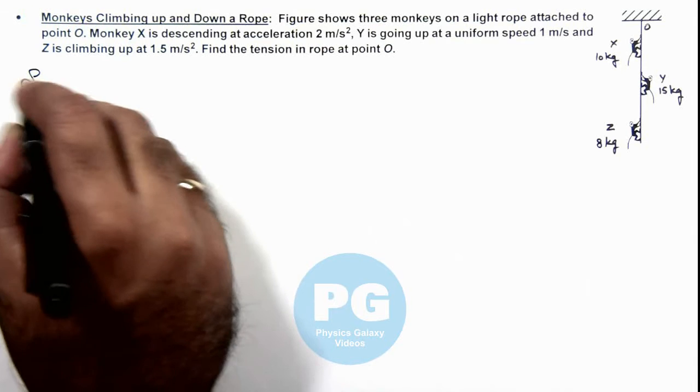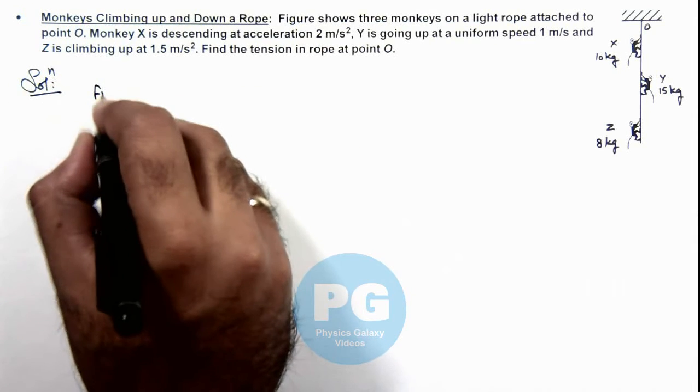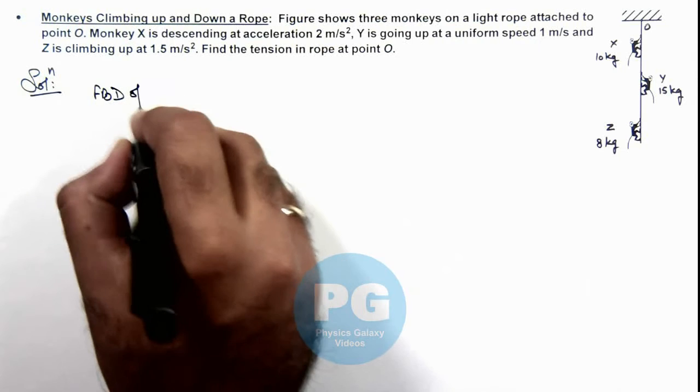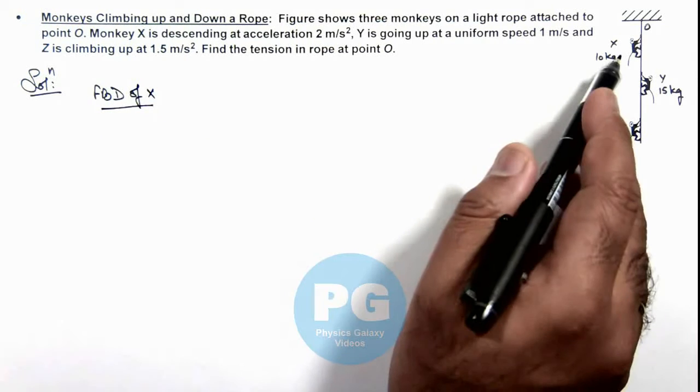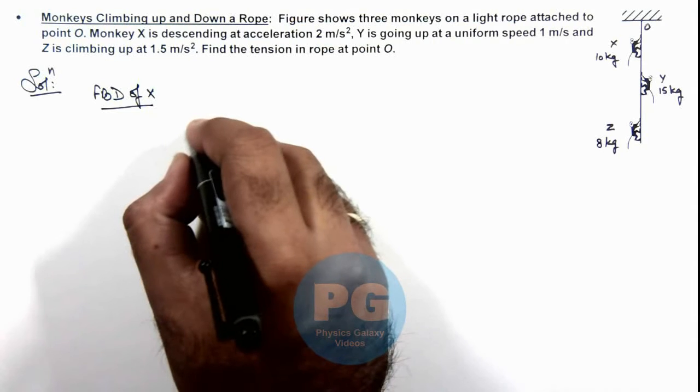Here in this situation, we can draw the free body diagrams of these monkeys. So if we draw a free body diagram of X and consider for this monkey X,